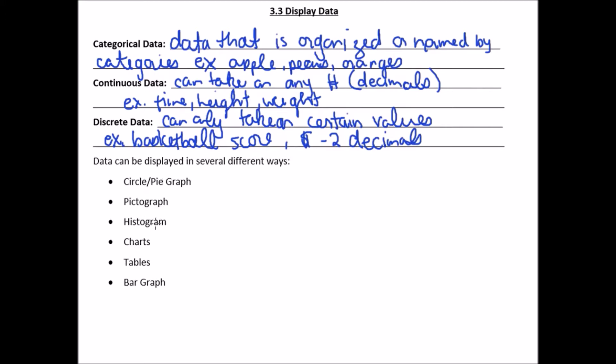Okay. So data can be displayed in several different ways. And we've learned these since like grade one: circle graphs, pictographs, histograms, charts, tables, and bar graphs. And we're going to take a look at those.